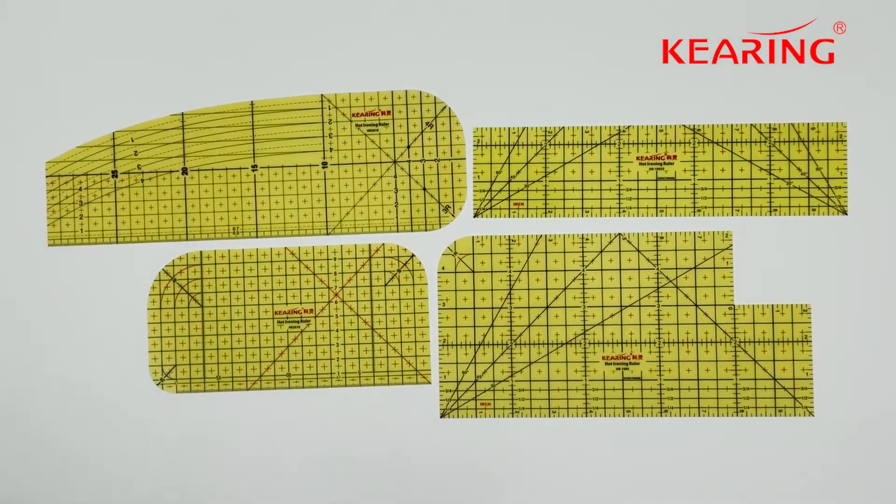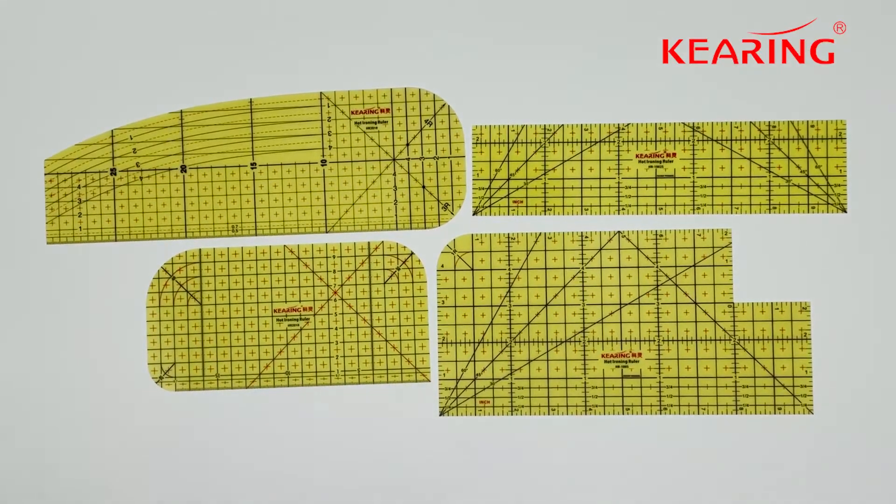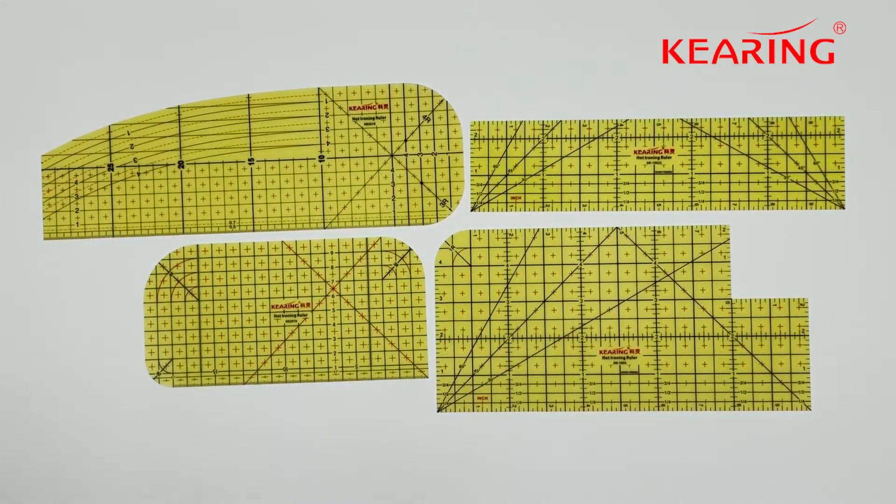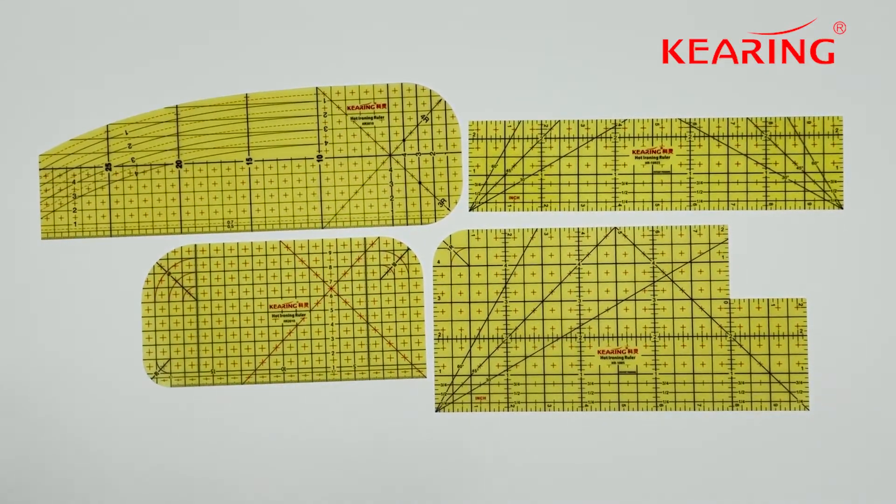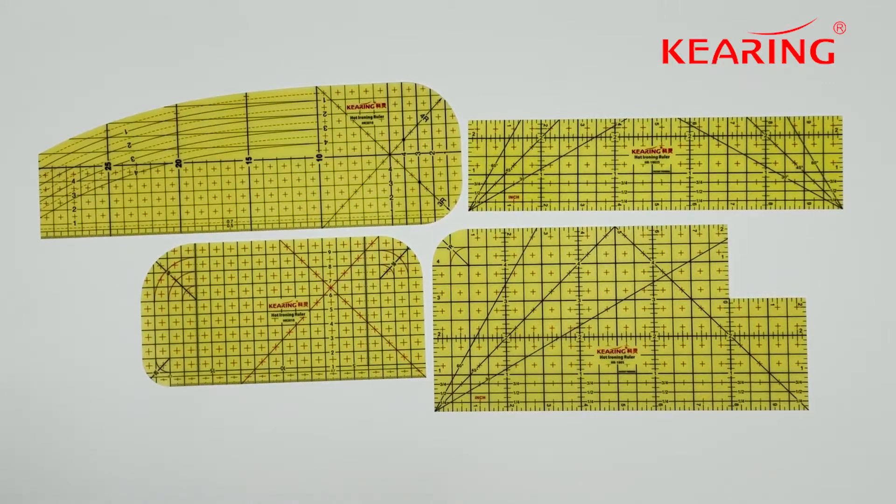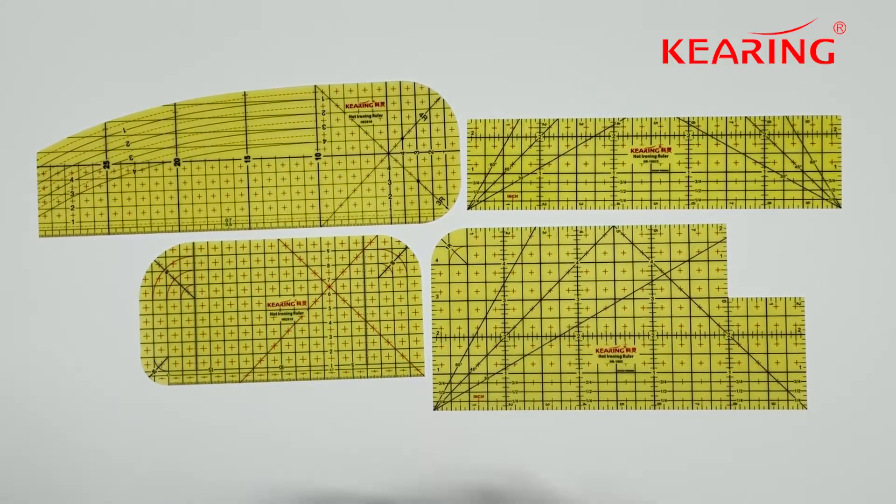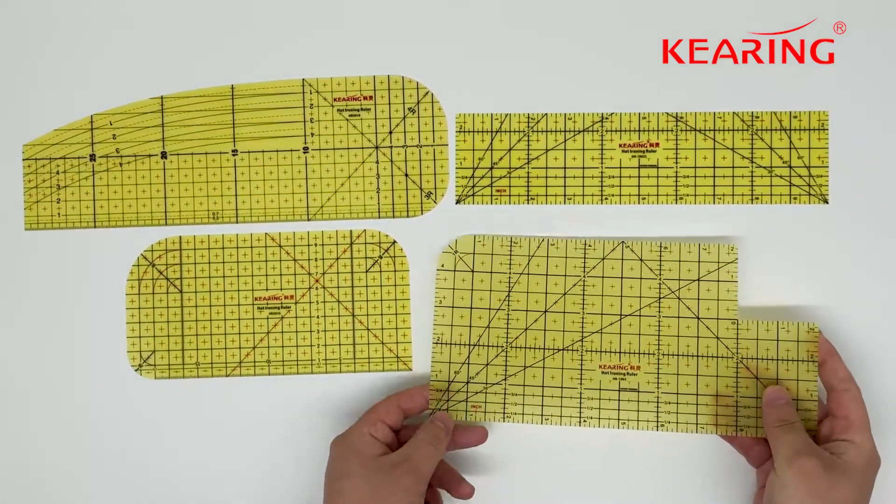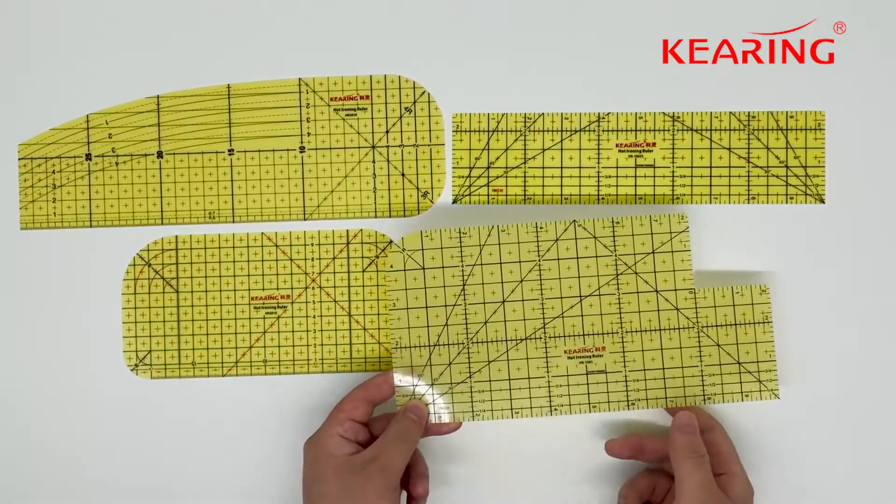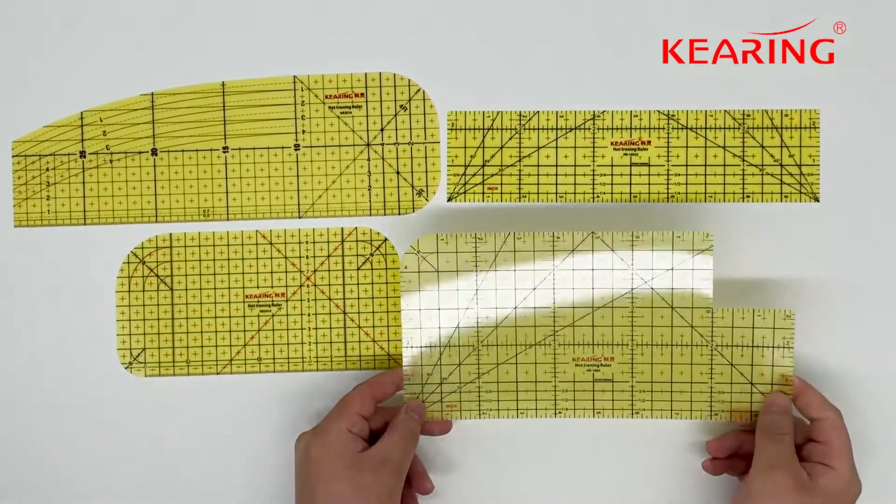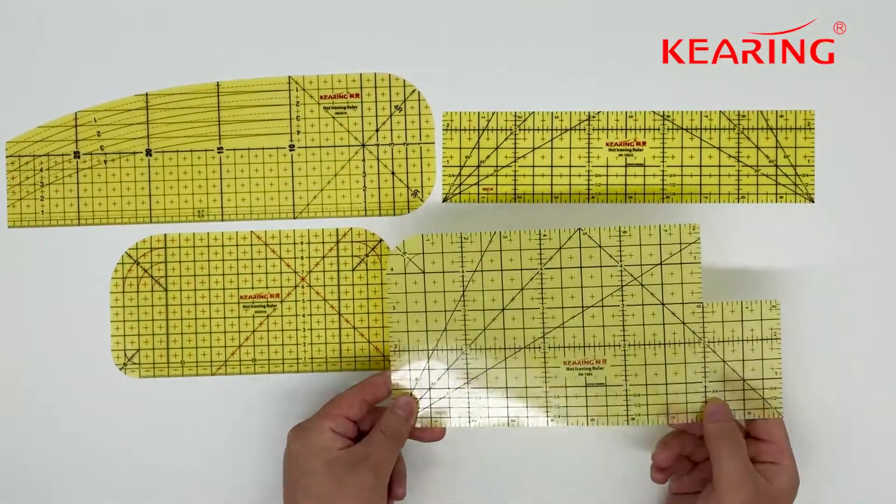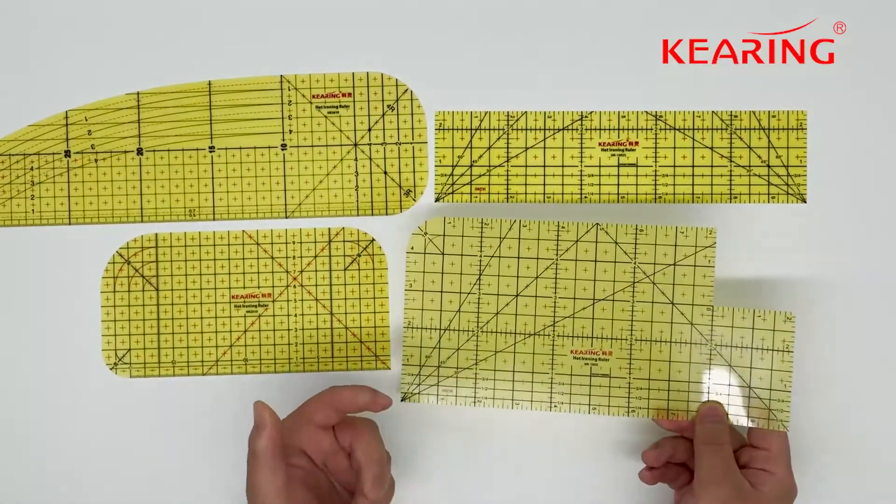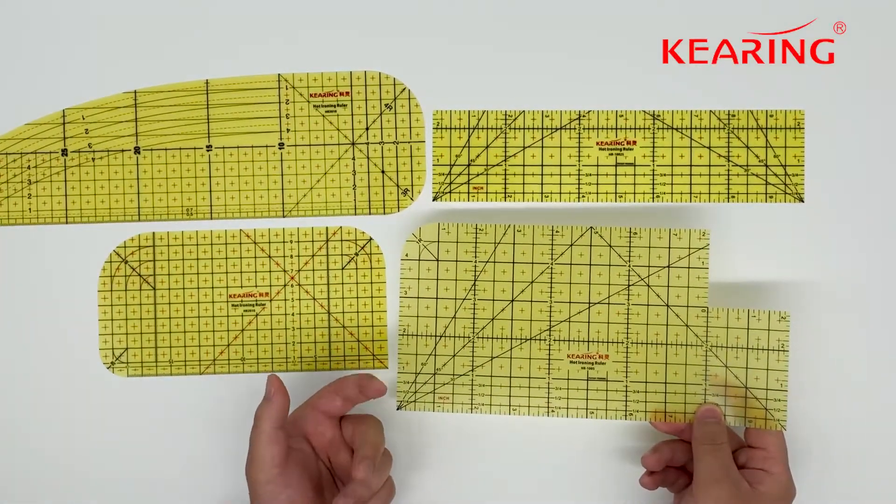Hello, today we'd like to recommend the hot ironing rulers from Kirin. During the past year, we've seen demand increasing sharply for DIY toy making and for craft enthusiasts or sewing crafters. They always like to use this type of hot ironing ruler to do their DIY projects, such as fabric face masks.